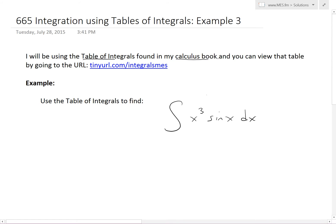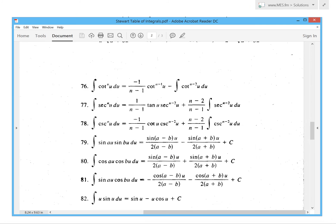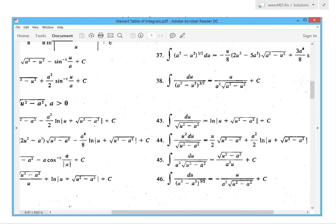You could view that same table by going to this URL: tinyurl.com/integralsmes. This is the table that you could download from the link and review, so it's just right here.